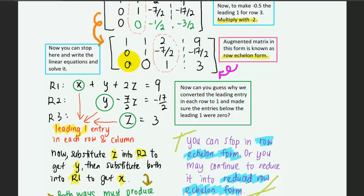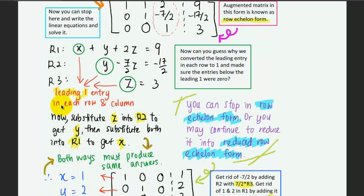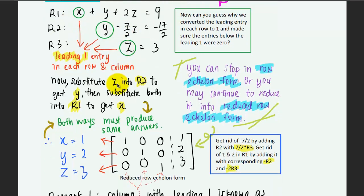Notice why we convert the leading entry to 1 and ensure entries below it are zero — the leading ones for X, Y, Z are arranged in descending form. We now substitute Z into the second equation to get Y, and once we have Y and Z we substitute back into the first equation to get X. The final solution is X = 1, Y = 2, Z = 3.